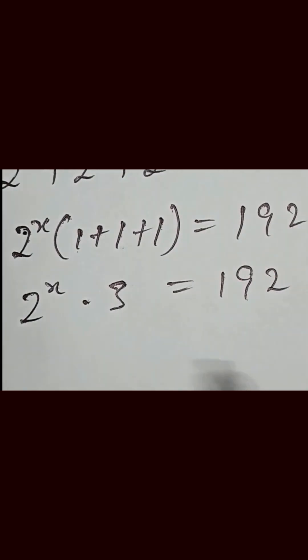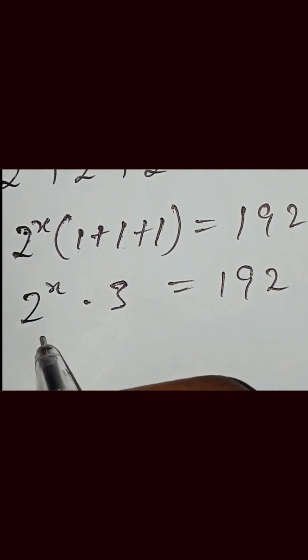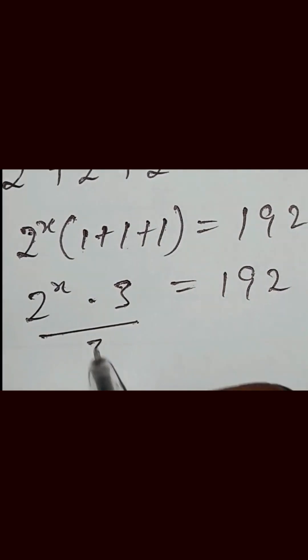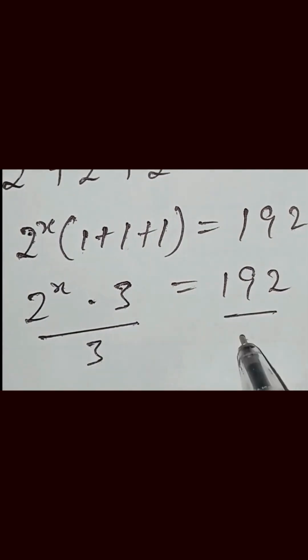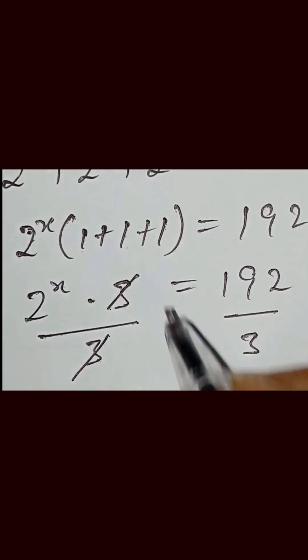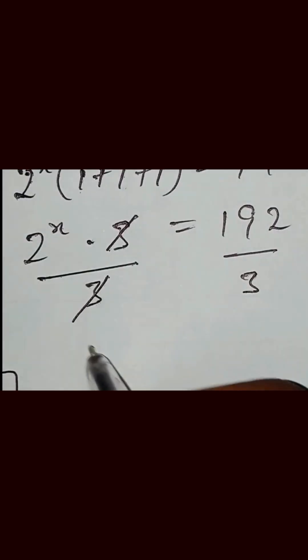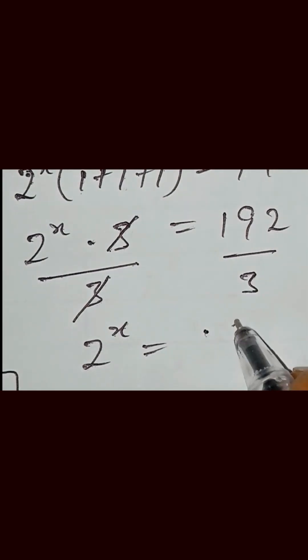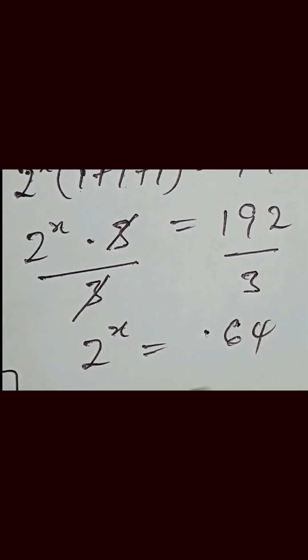Then we divide both sides by 3. Dividing both sides by 3, we have 2 raised to the power of x equal to 192 divided by 3, which gives us 64.